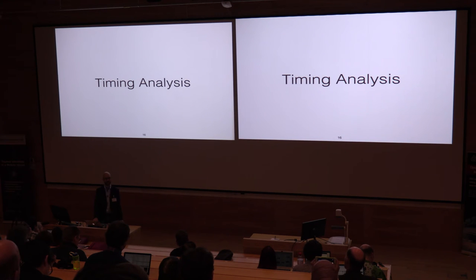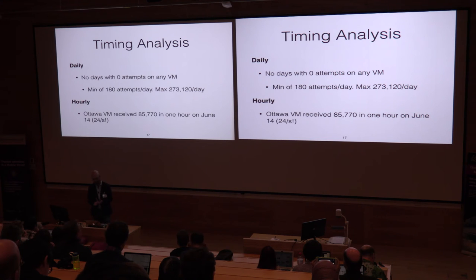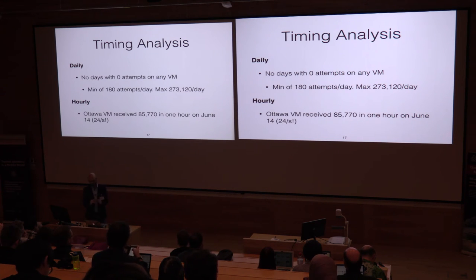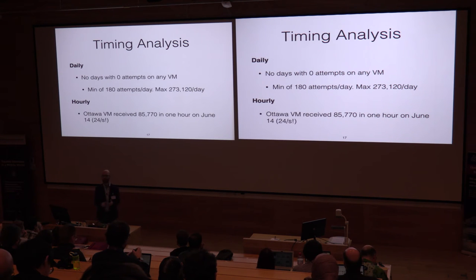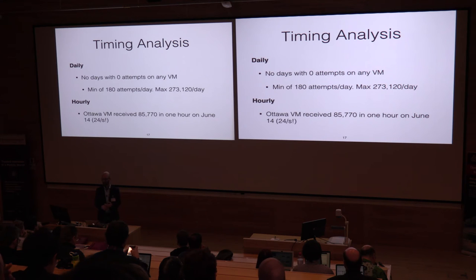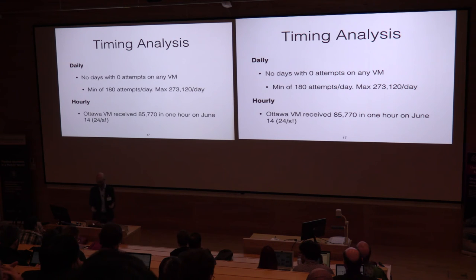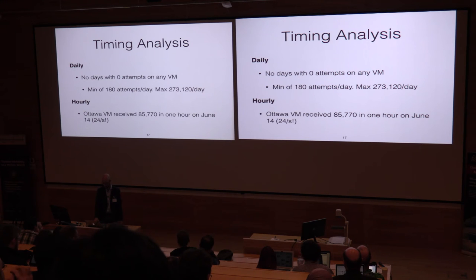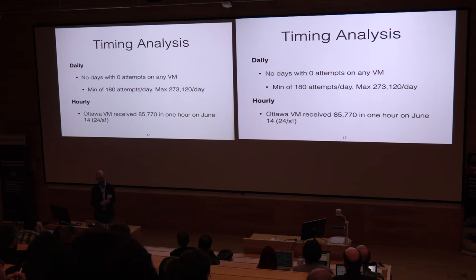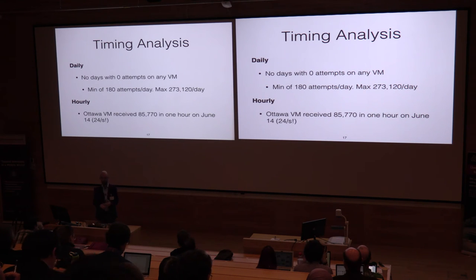For timing analysis, there wasn't a single day where a VM saw no login attempts. The minimum per VM was at least 180 attempts in a day, and we hit a maximum of 273,000 attempts in a single day. Importantly, these VMs had no DNS entry anywhere — no forward or reverse DNS, not advertised anywhere, just fresh IP addresses — and we still received all of these attempts. The Ottawa VM got hit hardest, receiving over 85,000 attempts in a single hour on June 14th — that's 24 login attempts per second.